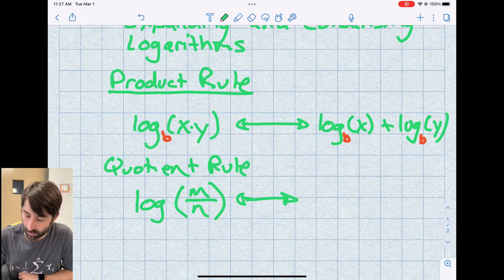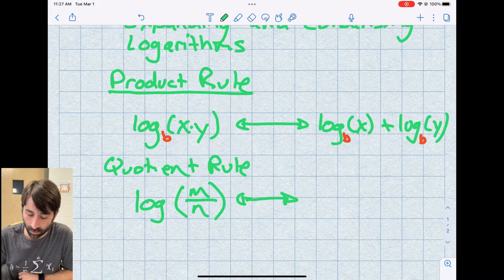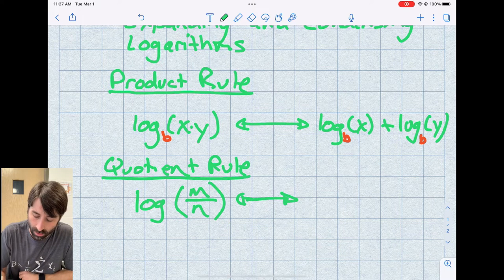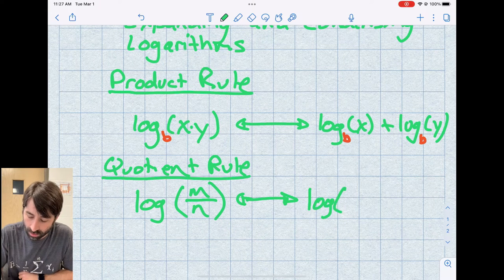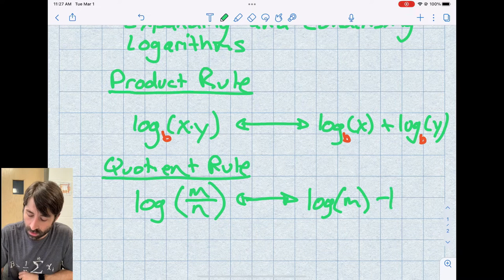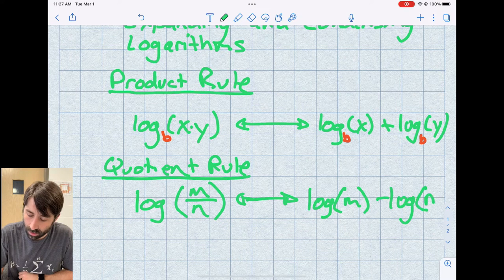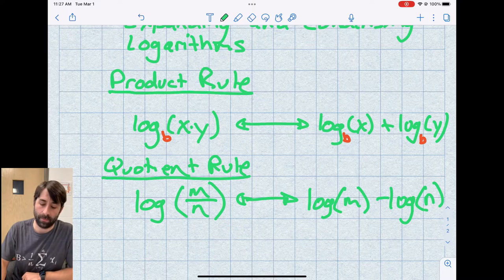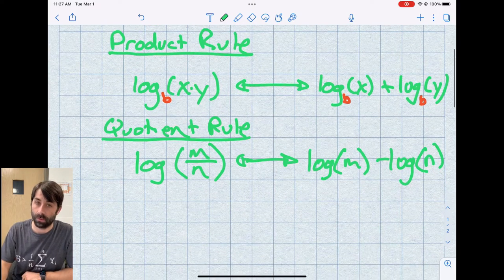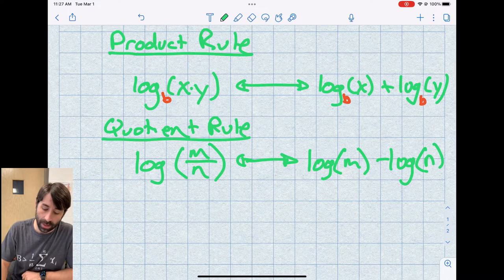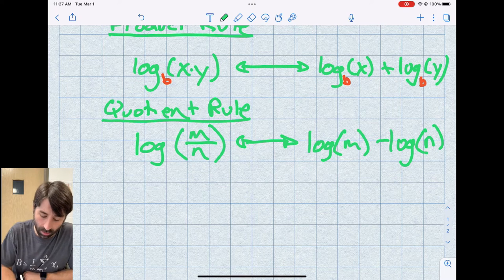And these are also closely related to our exponent rules. So what this looks like is log of m minus log of n. So those are the first two rules we'll use. And the last rule we use is called the power rule.